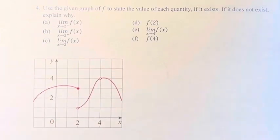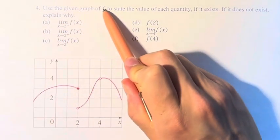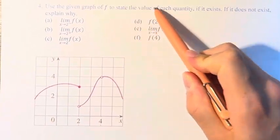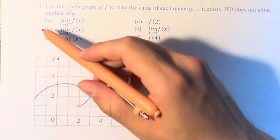Hello, and welcome back to another video. In this problem, we're asked to use the given graph of f, which we have right here, to state the value of each quantity if it exists. If it does not exist, explain why.